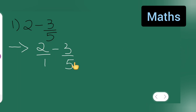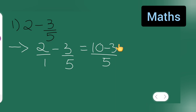2 fives are 10, minus 3 ones are 3, giving us 10 minus 3 upon 5 — we multiply the denominators. Then 10 minus 3 will be 7 upon 5. Now this is an improper fraction, so we have to convert it into a mixed fraction.